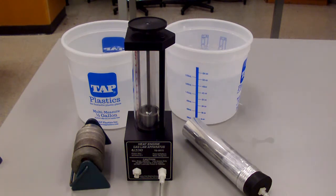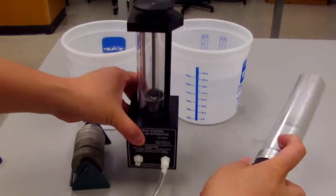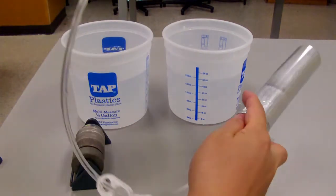Now, this heat engine apparatus comes in two parts. It has a piston and the aluminum can, connected by this tube.